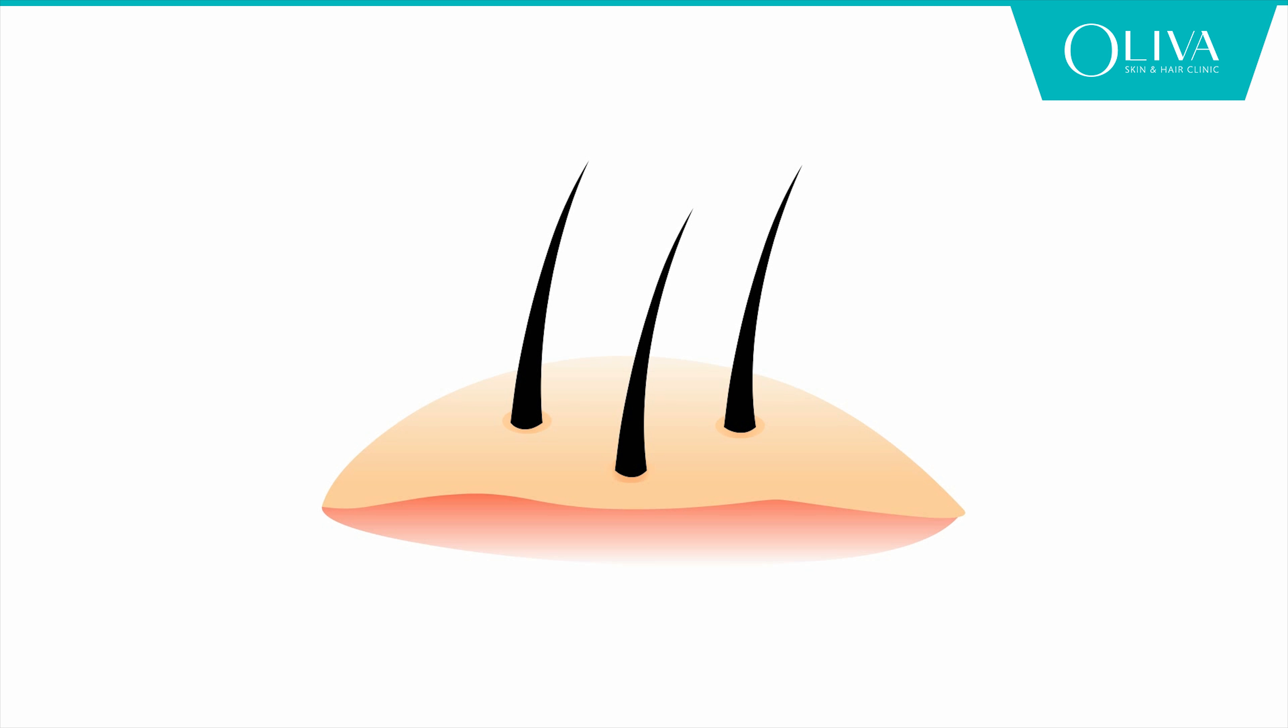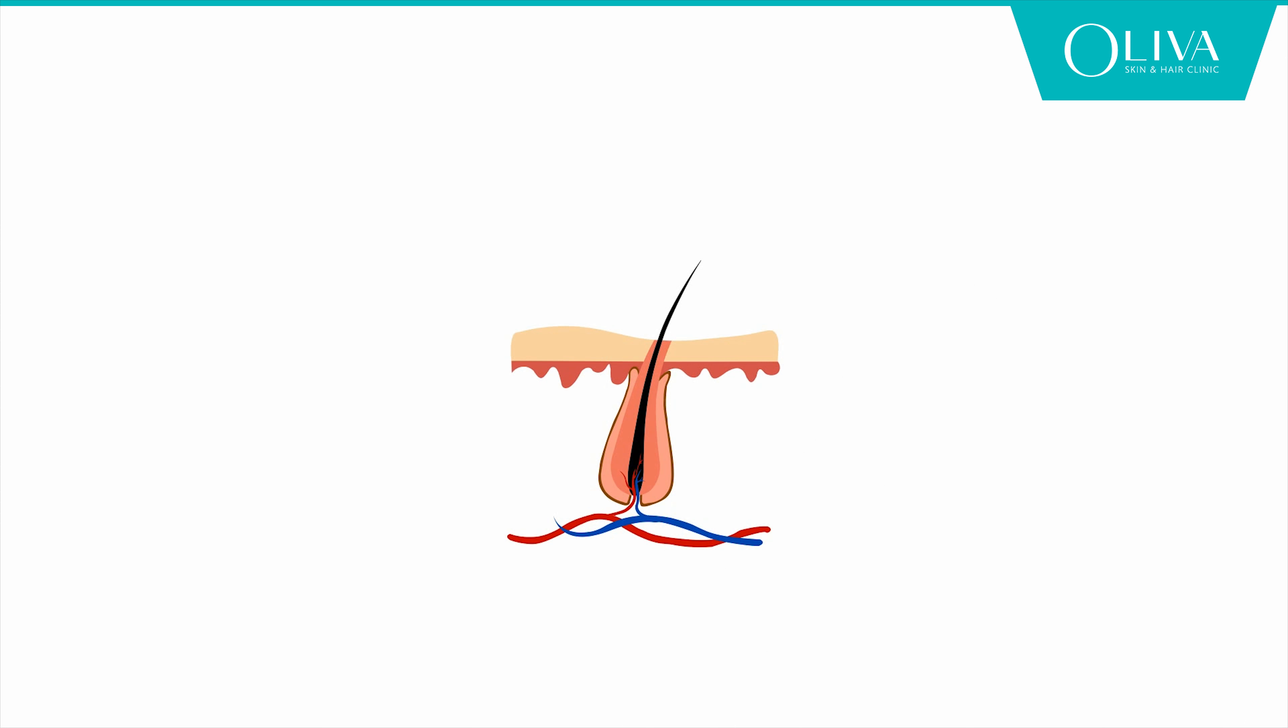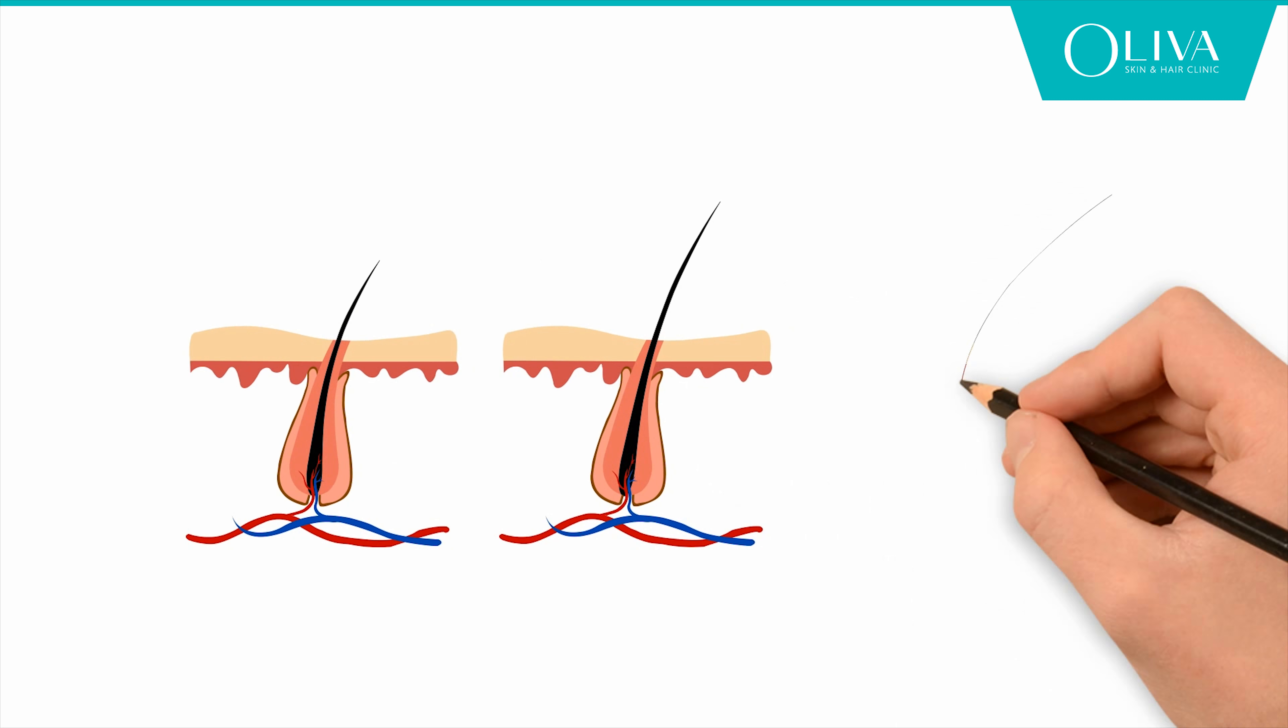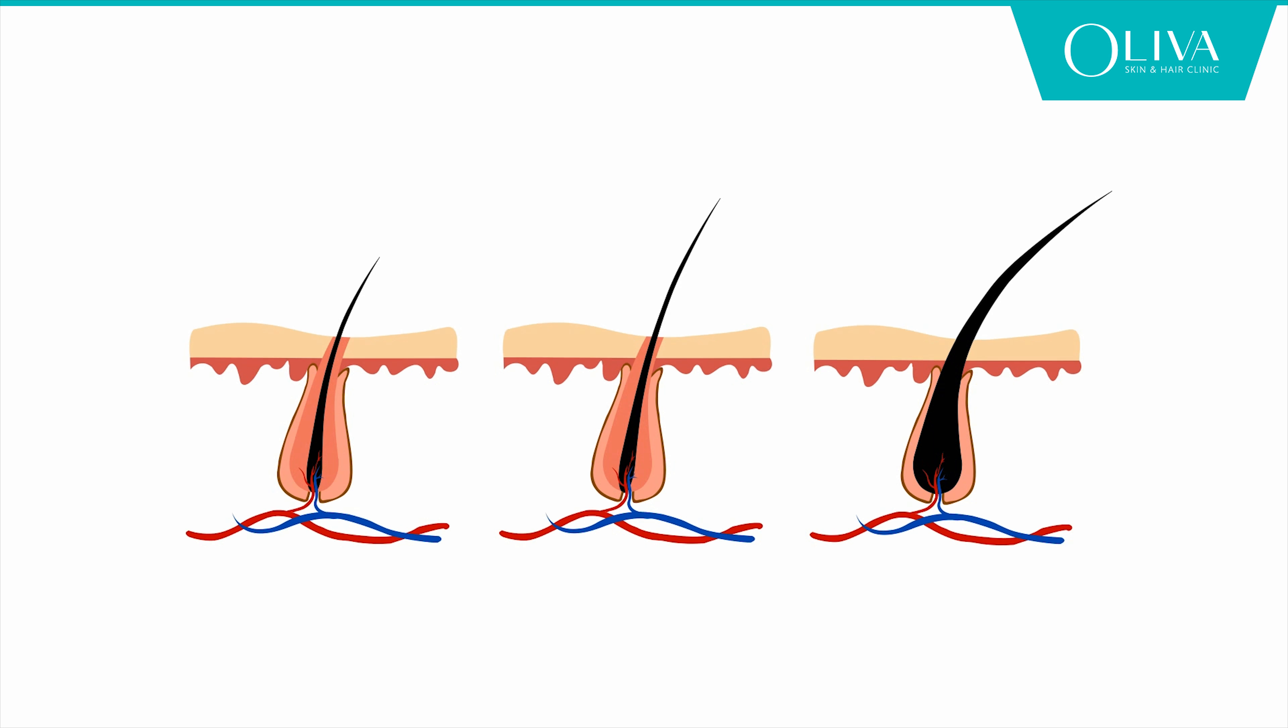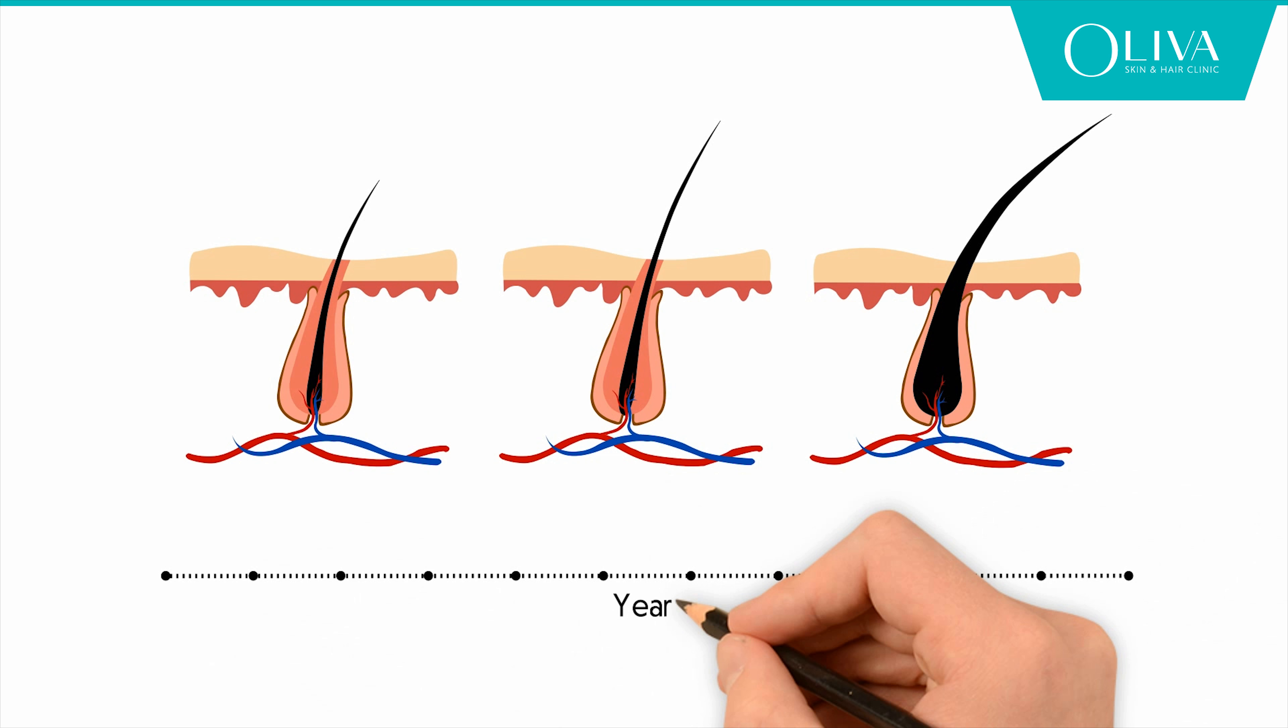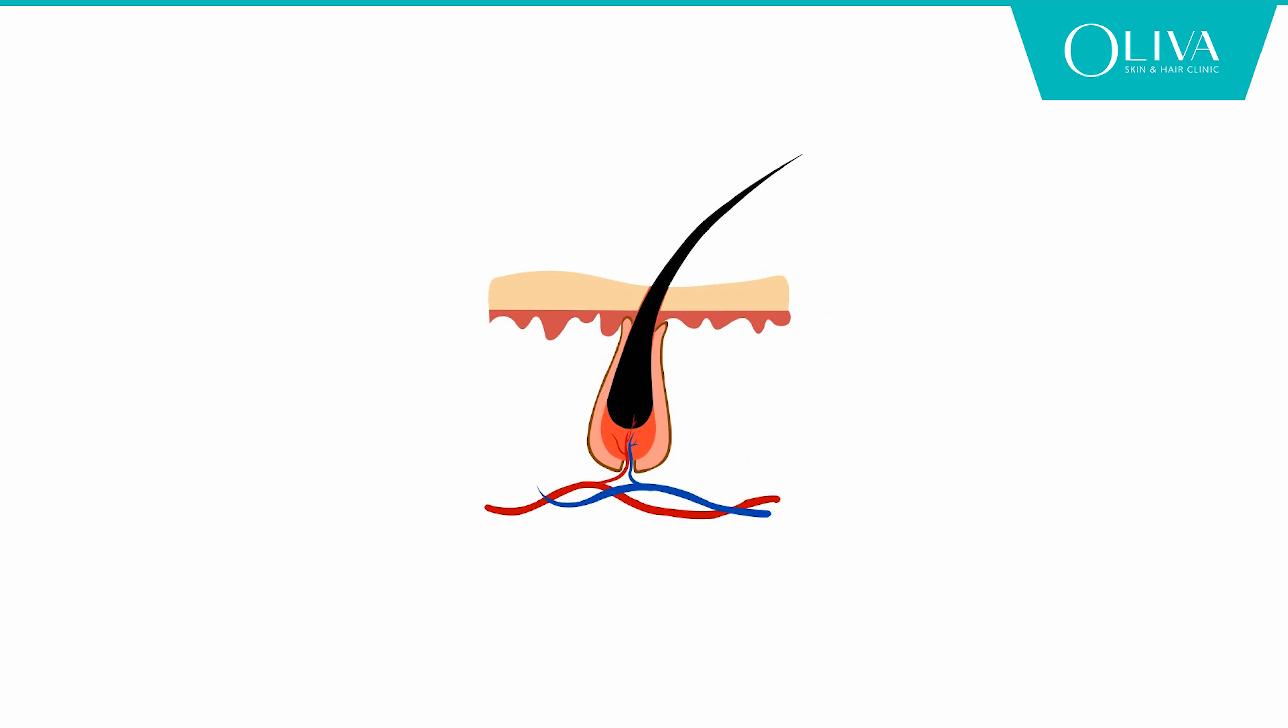First is anagen, the growth phase, in which the hair grows and thickens. This stage lasts for three years, after which the hair gets separated from its root. This stage is referred to as catagen phase, lasting for about three weeks.